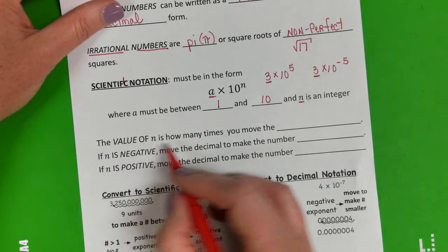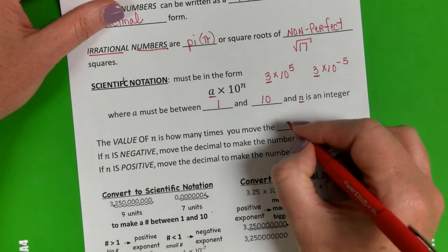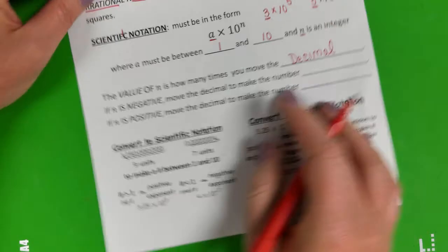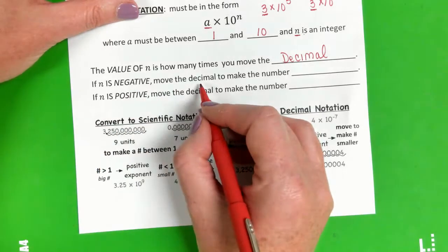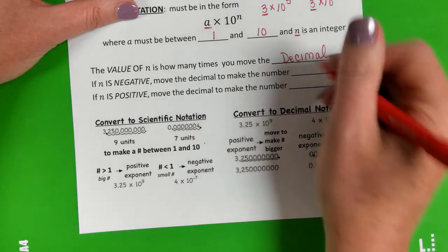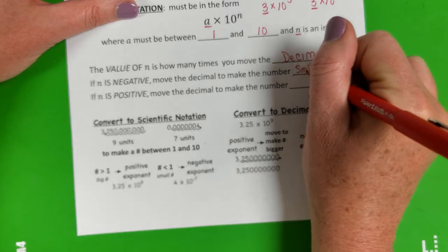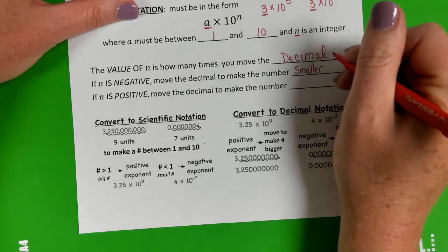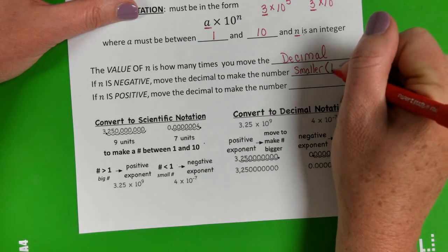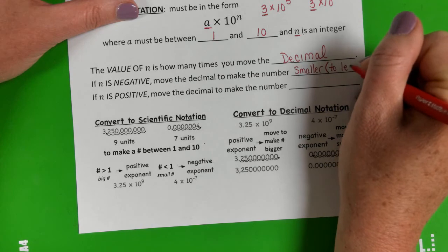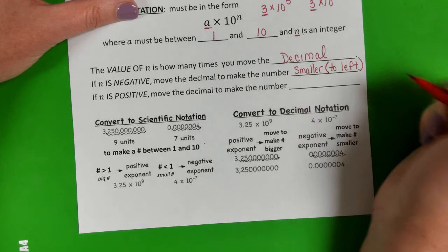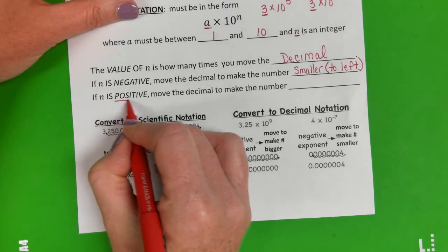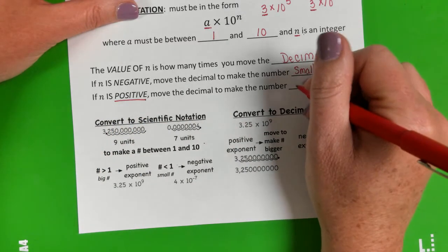Now the value of n is how many times you move the decimal place. Remember when we're converting, if it's negative, we make the number smaller. Just think negative is smaller anyway, right? So we're going to make a smaller number, which technically means we move the decimal to the left. But if you think about making it smaller, that might be easier. If n is a positive, then we move the decimal to make the number bigger.